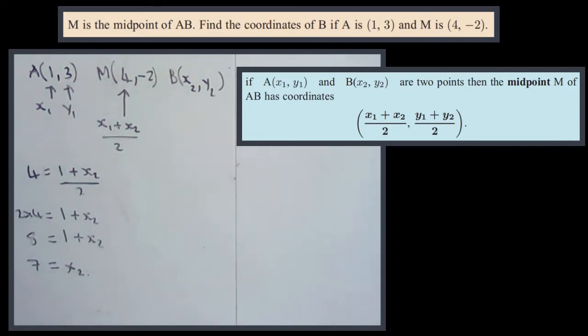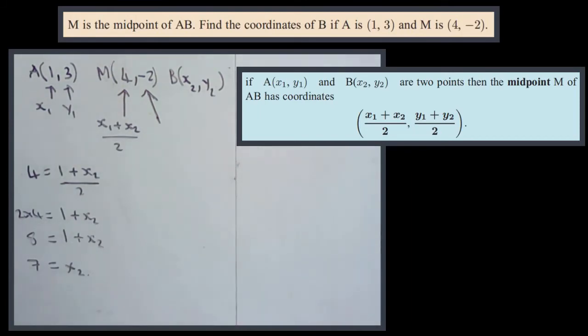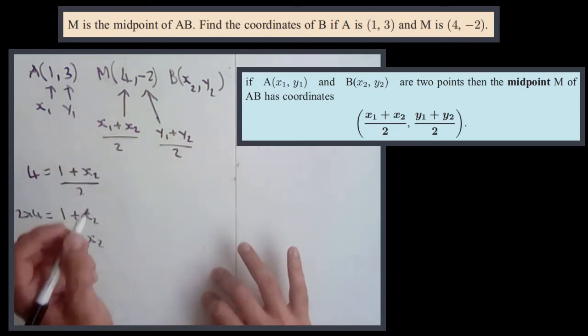We do exactly the same thing for y2. So this -2 here, if you look at the formula, that is (y1+y2)/2.